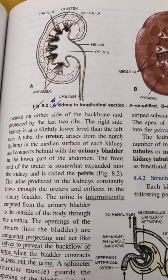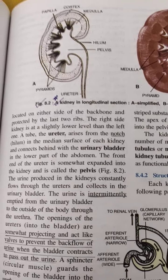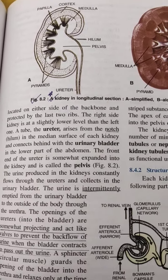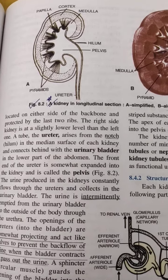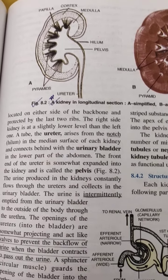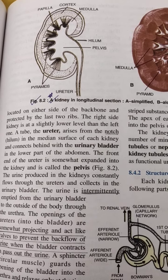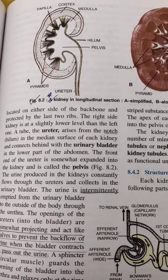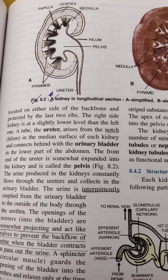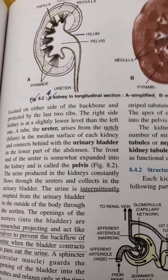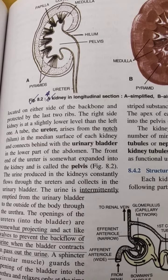This diagram shows the pelvis very clearly. We can see the pelvis, the hilum (the notch), the pyramids, and also the cortex and medulla parts of the kidney. This diagram is also very important for labelling in your exam.